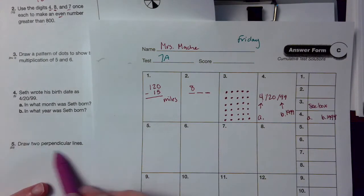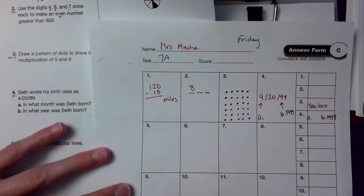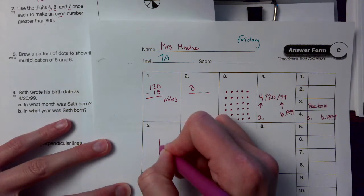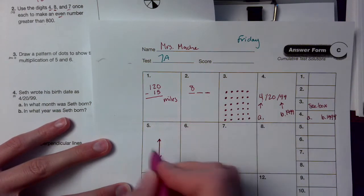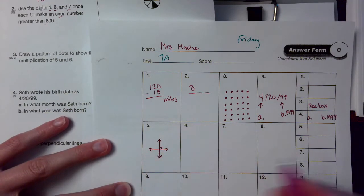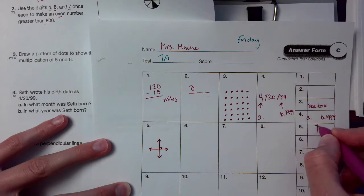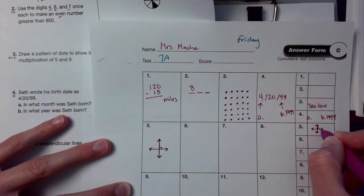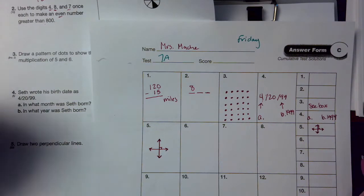Number 5. Draw two perpendicular lines. Remember, perpendicular lines meet at a right angle. So you're just going to draw your two perpendicular lines. Notice I've got arrows on all sides of this because the perpendicular lines go on forever and ever.